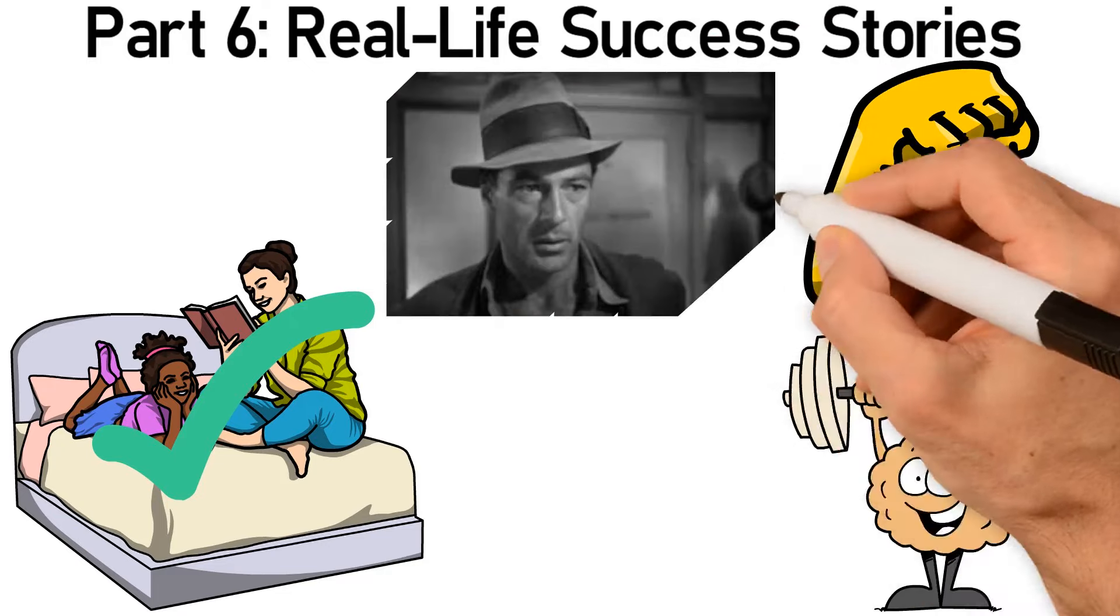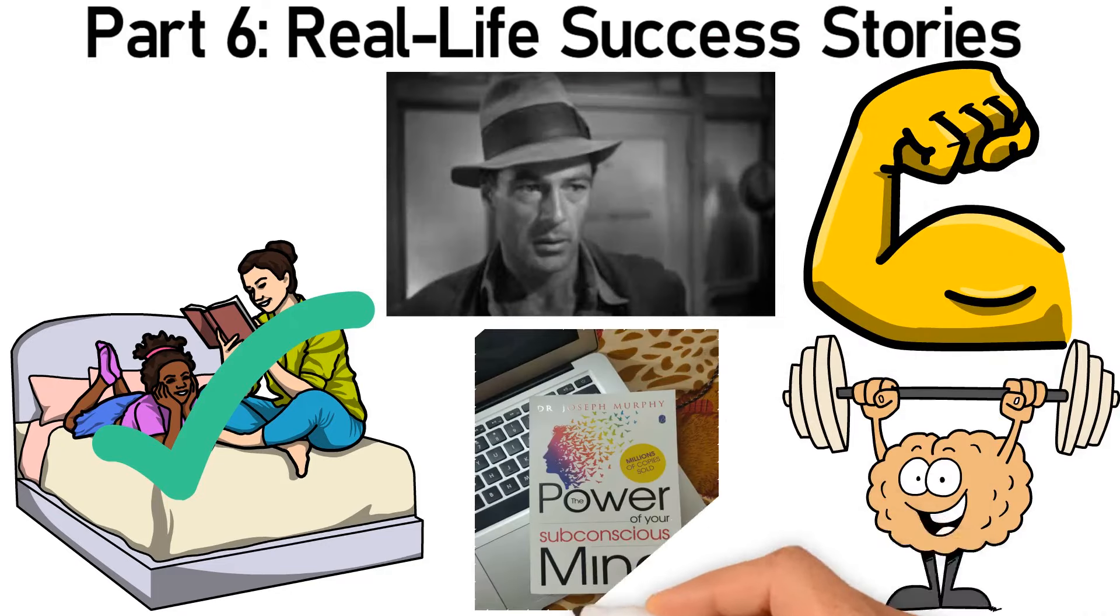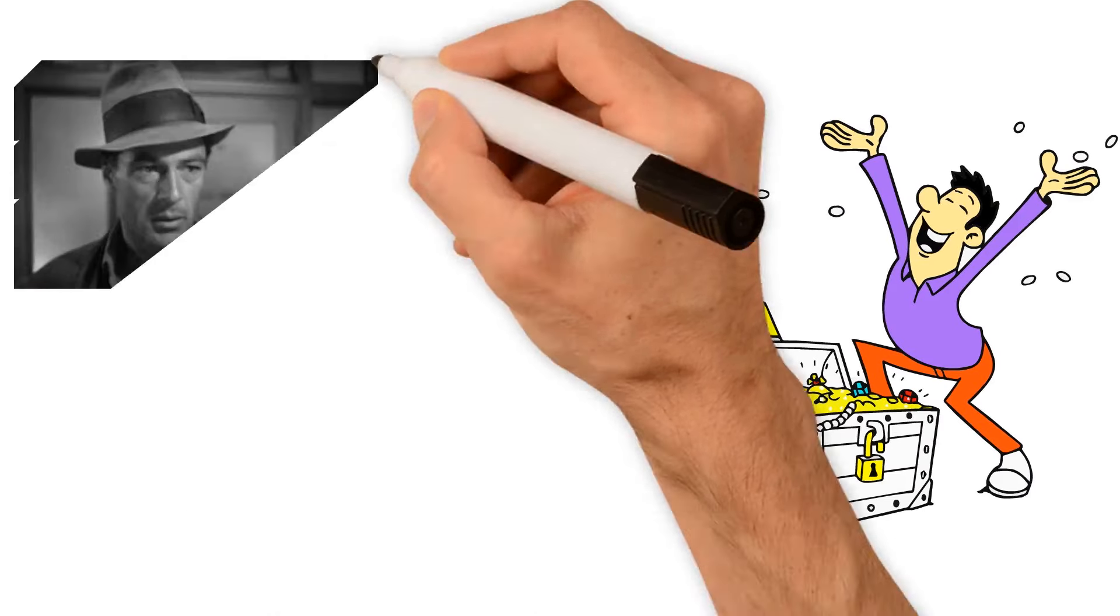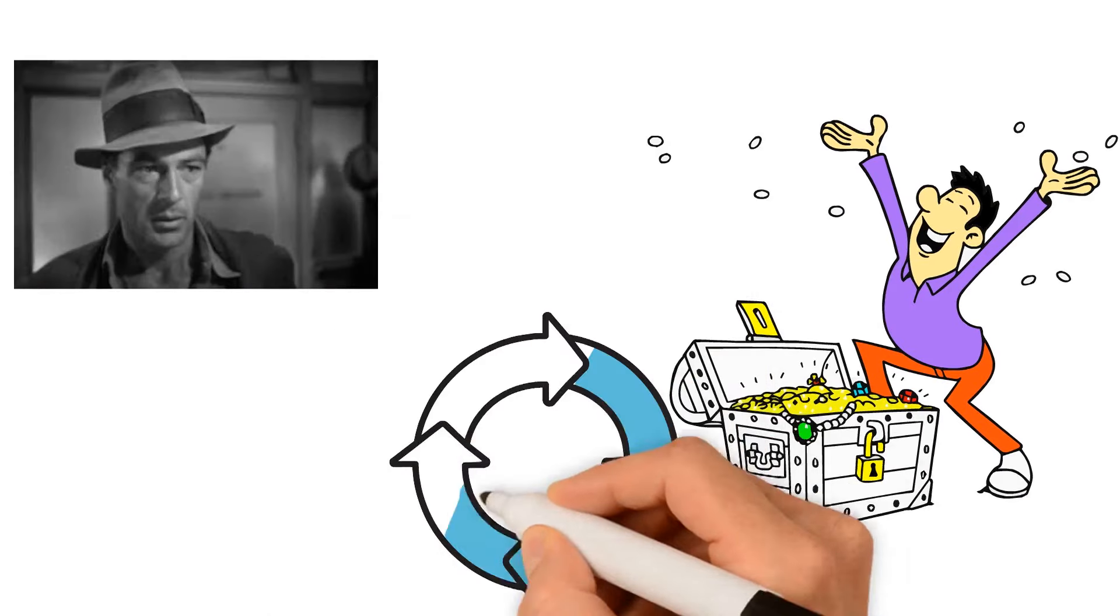Meet John, a character from Dr. Murphy's book. Struggling with financial difficulties, John felt trapped in a cycle of negativity and despair.